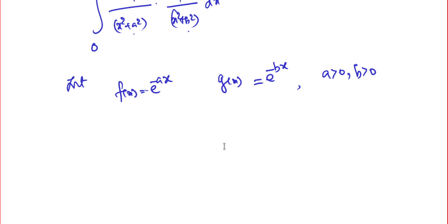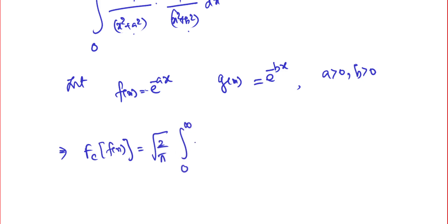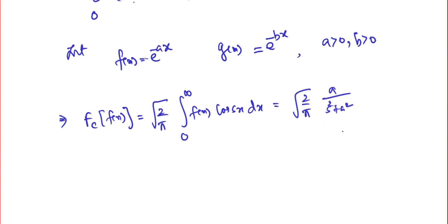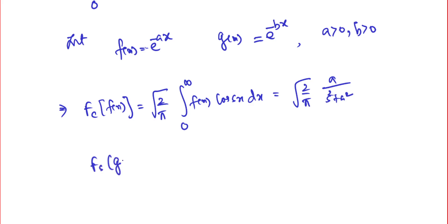Taking f(x) = e^(−ax), we know the Fourier cosine transform of f(x) is √(2/π) times the integral from 0 to infinity of f(x)·cos(sx) dx. From previously solved problems, this equals √(2/π) · a/(s² + a²) — refer to the Fourier cosine and sine transform problems video. Similarly, the Fourier cosine transform of g(x) = e^(−bx) is √(2/π) · b/(s² + b²).